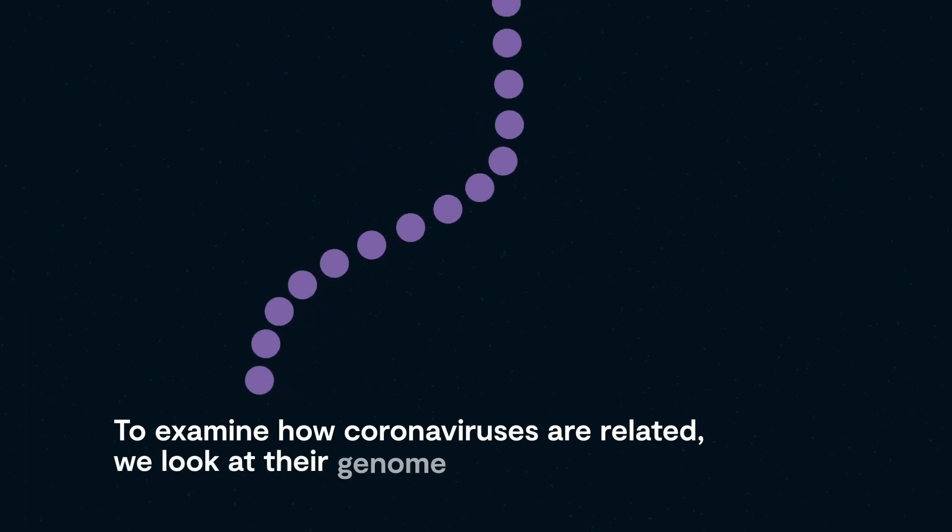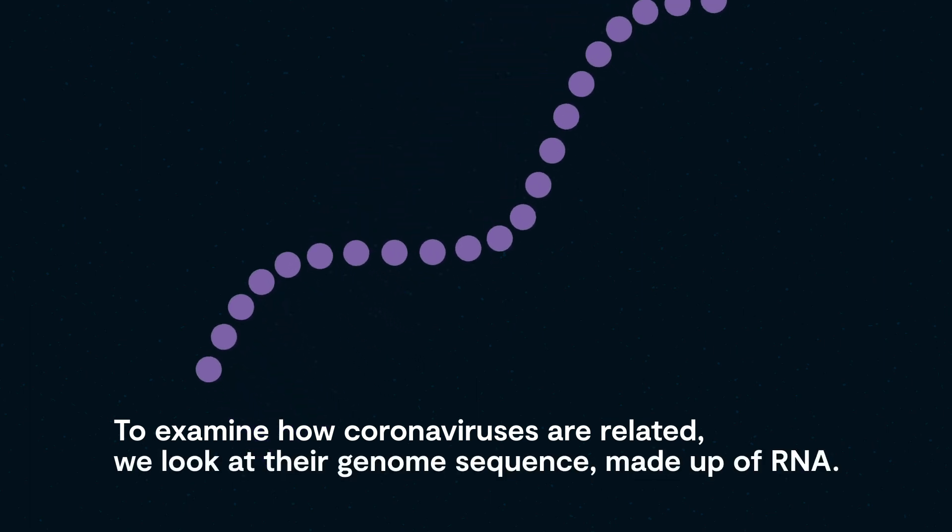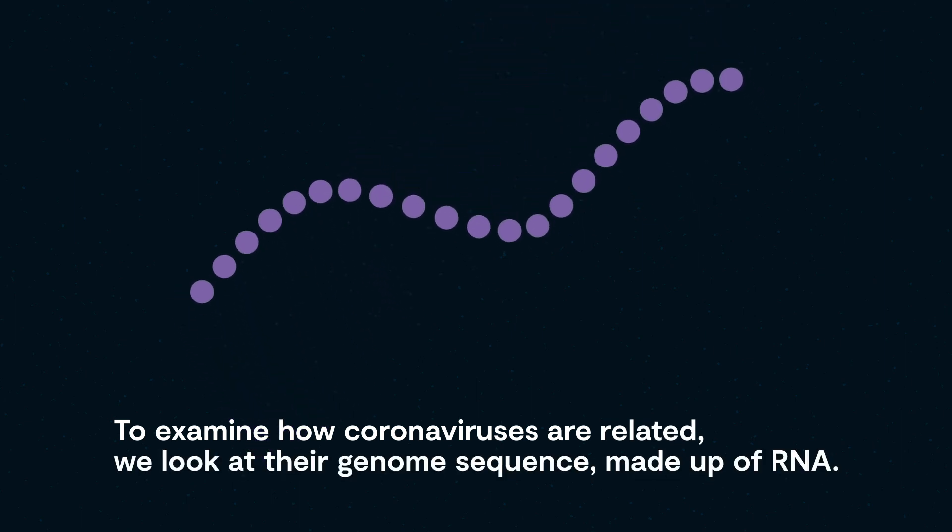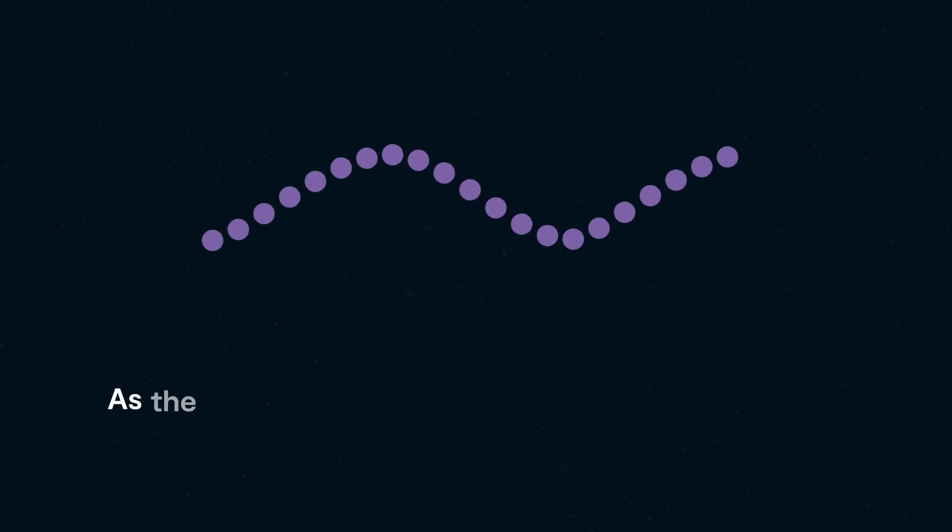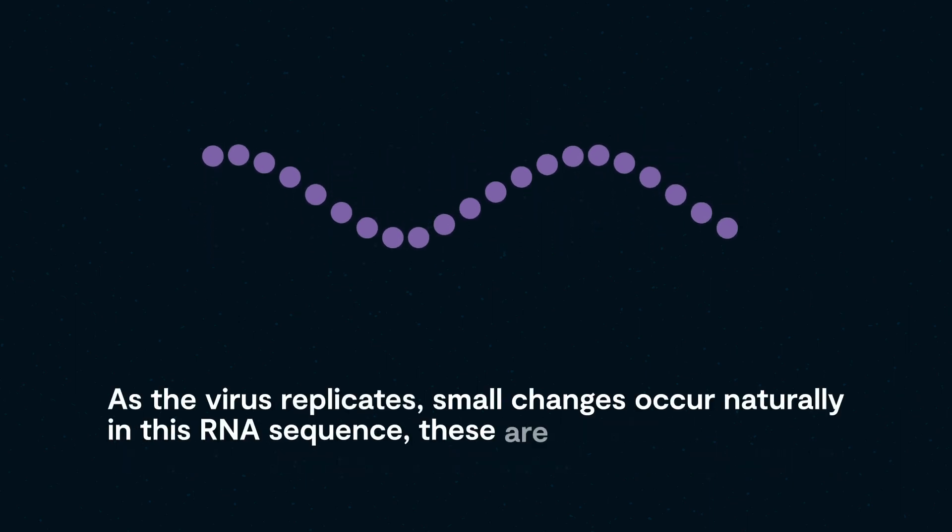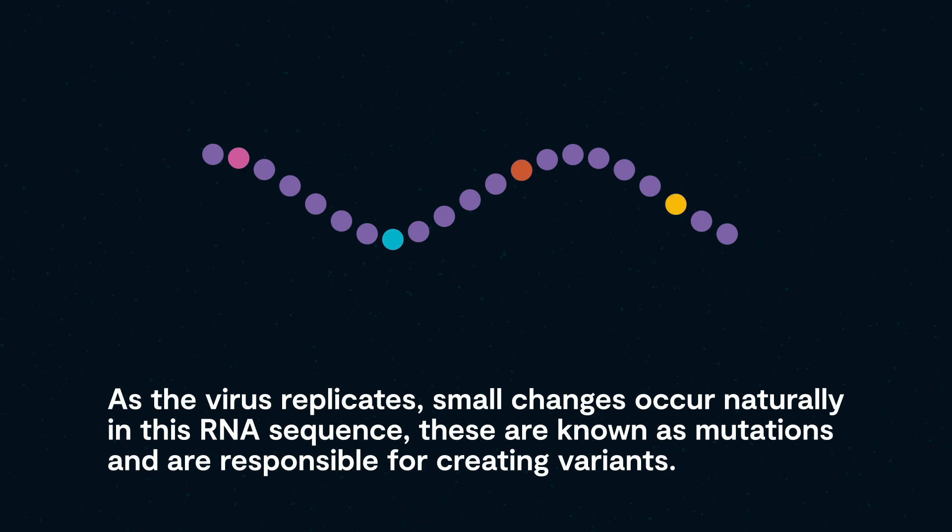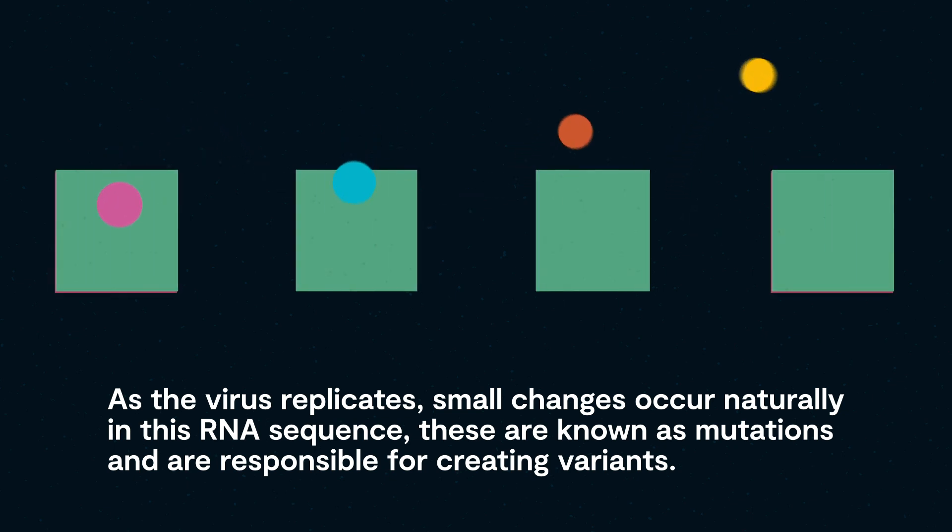To examine how coronaviruses are related, we look at their genome sequence, made up of RNA. As the virus replicates, small changes occur naturally in this RNA sequence. These are known as mutations and are responsible for creating variants.